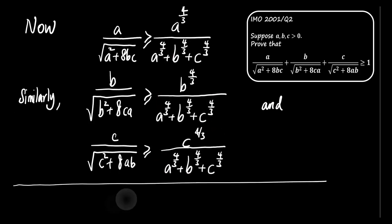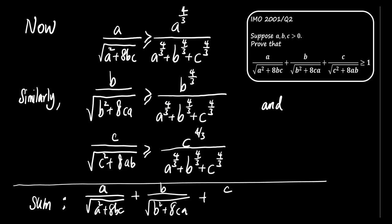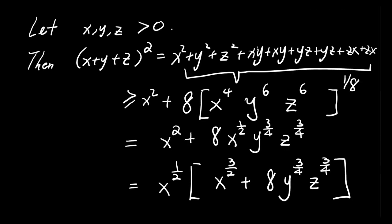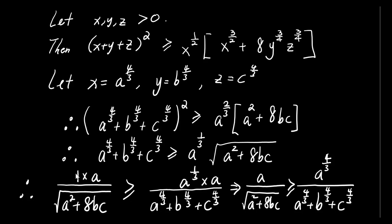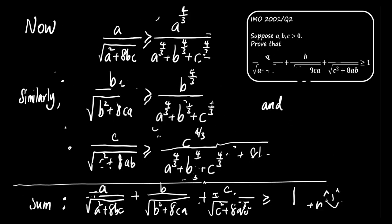When we add these three inequalities, we get A divided by the square root of A squared plus 8 times B times C plus B divided by the square root of B squared plus 8 times C times A plus C divided by the square root of C squared plus 8 times A times B is greater than or equal to 1. Hence, we have proven that the original inequality holds. In conclusion, we've shown that the given inequality is true by applying the AM-GM inequality and using algebraic manipulations. Thank you so much for watching.